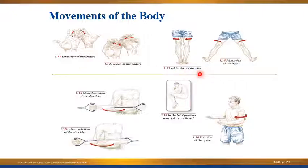Next are adduction and abduction. Adduction is movement towards the midline, and abduction is movement away from the midline. Here you see that occurring at the hips, and another area where you can do that is at the shoulder — you can adduct and abduct the shoulder. Think about what plane that occurs in. If you said the frontal plane, you're correct — it occurs in the frontal plane.